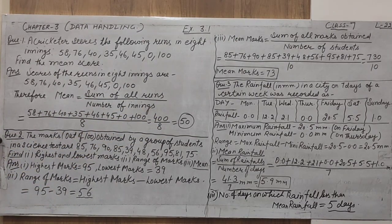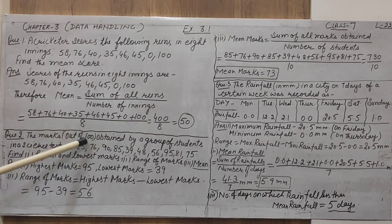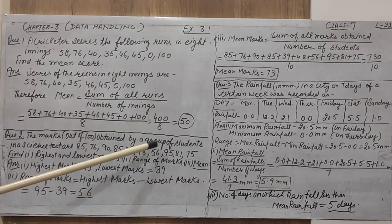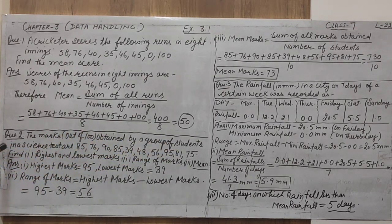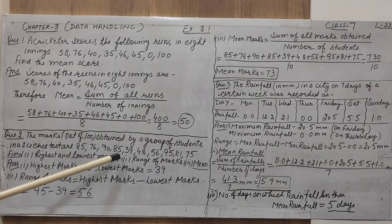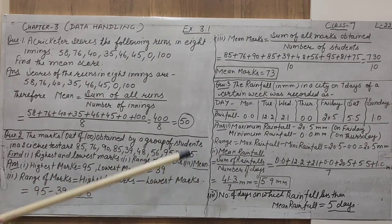The next question is: the marks out of 100 obtained by a group of students in a science test are 85, 76, 90, 85, 39, 48, 56, 95, 81, and 75.